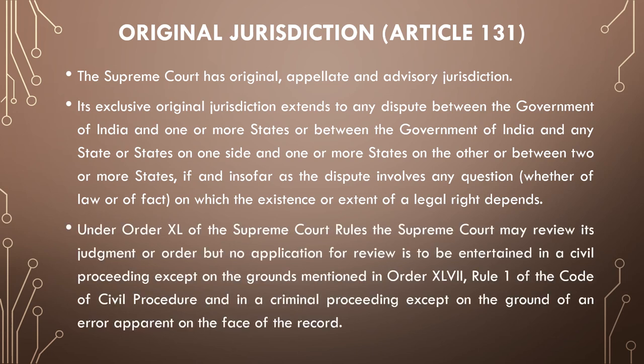Under Article 141 of the Supreme Court rules, the Supreme Court may review its judgment or order, but no application for review is to be entertained in a civil proceeding except on the grounds mentioned in Order 47, Rule 1 of the Code of Civil Procedure, and in criminal proceedings except on the ground of an error apparent on the face of the record.